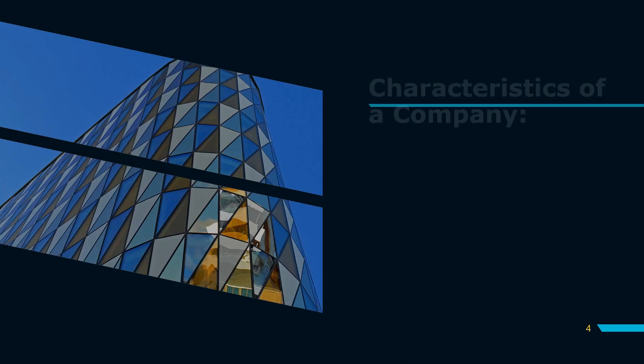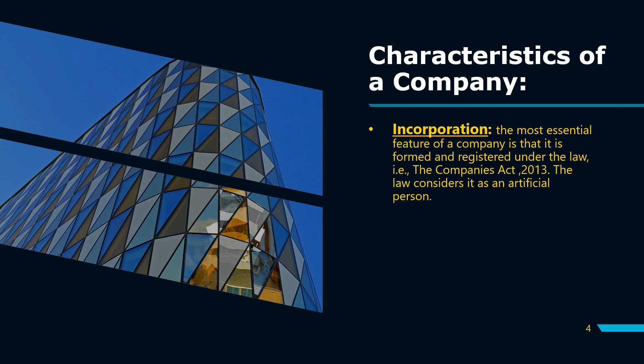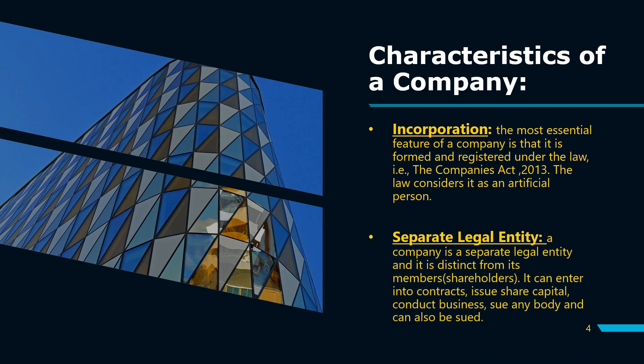Now let's understand the characteristics of a company. Starting with incorporation — incorporation ka matlab hai ki company aap aise hi nahi khol sakte. Company kholne ke liye aapko ek legal procedure follow karna padega, and in India the legal procedure is stated under the Companies Act 2013. A company ko Register of Companies ke under register hona padta hai, uske baad hi woh established ho sakti hai.